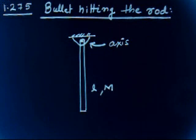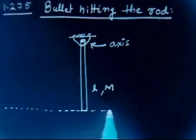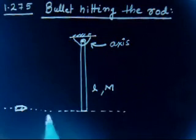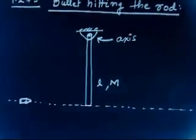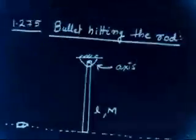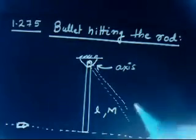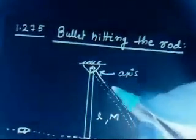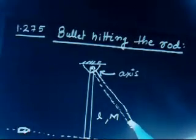A horizontally flying bullet of mass m strikes the lower end of the rod and gets stuck into it. As a result, the rod swings through angle alpha. The bullet is coming horizontally and hits the lower end. After the collision, the bullet gets embedded into the rod and the rod goes up by angle alpha.